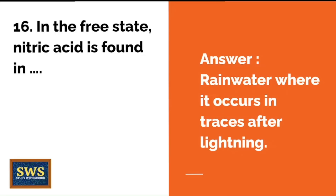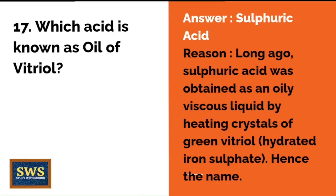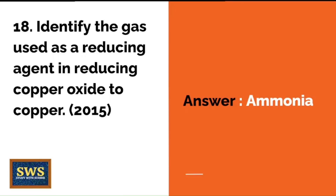Which acid is known as the oil of vitriol? The correct answer is sulfuric acid. Long ago, sulfuric acid was obtained as an oily, viscous liquid by heating crystals of green vitriol, which is hydrated iron sulfate — hence the name. This may come more as an MCQ.